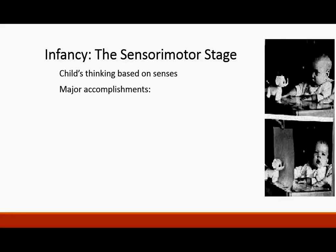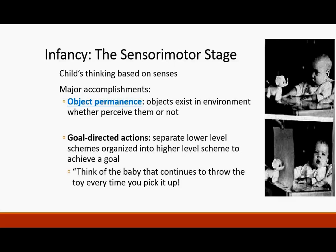In the sensorimotor stage, a child's thinking is based on the senses. We learn object permanence — understanding that even though a face is covered in peekaboo, the face is still there. This is normally learned towards the end of the zero-to-two age range. Objects exist in the environment whether we can perceive them or not. Goal-directed actions also start to develop, where infants organize lower-level schemes into higher-level schemes to achieve a goal — like the baby who keeps throwing a toy every time you pick it up, learning a pattern.